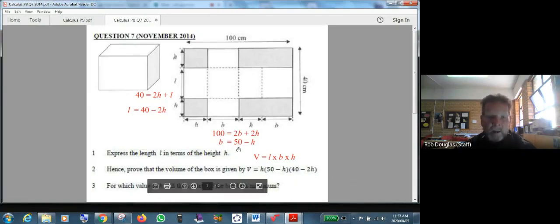So now we've got the base, we've got the length, we know that the height is h. We've got it all in terms of one variable h: 50 minus h, 40 minus 2h, and h itself. If we multiply those three things together, we get an equation for the volume of the box.